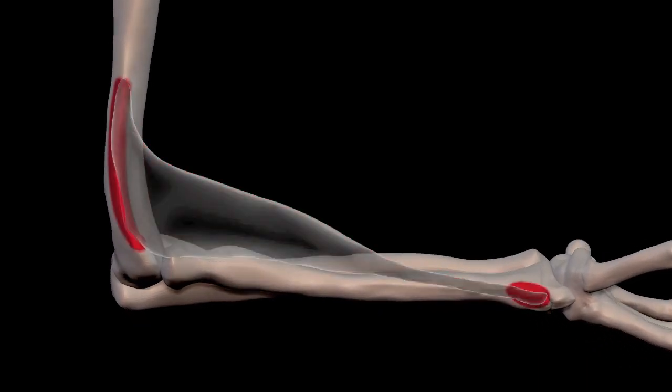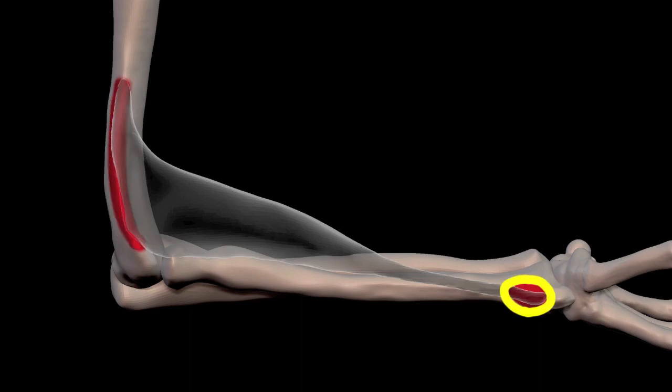Here are the two attachments. Its origin is on the ridge going up the side of the humerus. Distally, you can see that it attaches to the radius.